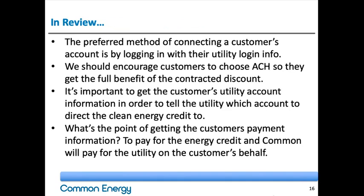Let's go over a couple of key points. Number one: the preferred method of connecting a customer's account is by logging in with their utility account info — this is important because we can pull all data related to the customer's account. If we just enter the utility account number, we have to manually pull that information. Number two: encourage customers to choose ACH so they get the full benefit of the contracted discount. If they choose the credit card option, a 2.9% fee reduces the overall 10% discount. Number three: it's important to get the customer's utility account information to tell the utility which account to direct the clean energy credit to — without that information, we simply can't convert the customer.